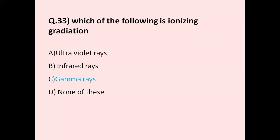Question number 33: Which of the following is ionizing radiation? Option A ultraviolet rays, option B infrared rays, option C gamma rays. The correct answer is gamma rays. Gamma rays are ionizing radiation. Ultraviolet and infrared rays are non-ionizing radiation. The correct answer is gamma rays.